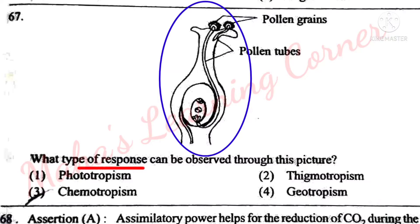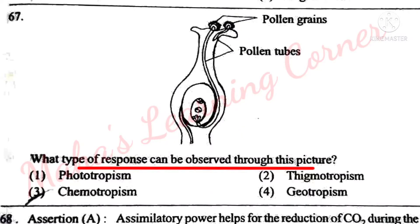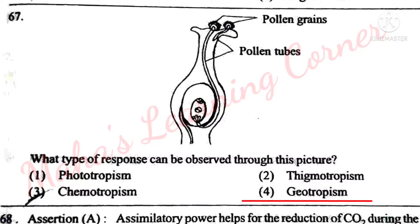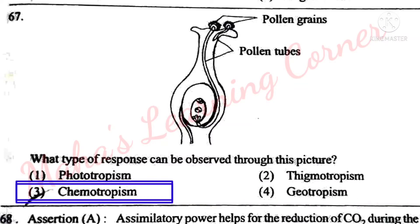Next question. What type of response can be observed through this picture? Options: Phototropism, Thigmotropism, Chemotropism, Geotropism. Correct answer: Option 3 – Chemotropism. The ripe stigma secretes a sugary substance. This chemical substance stimulates the pollen grain which falls on the stigma. Pollen grain responds to this stimulus as pollen tubes grow to reach the ovule for fertilization. This type of response to chemicals is called chemotropism.